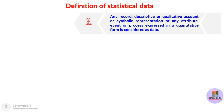What is the definition of statistical data? In statistics or biostatistics, when we are dealing with any kind of record — it can be a descriptive record, a qualitative account, or even a symbolic representation of any attribute, event, or process that can be expressed in number form or in quantitative form — this is known as data.